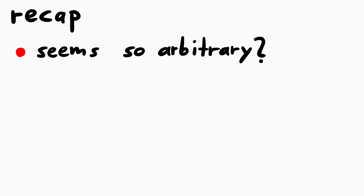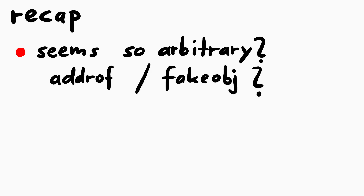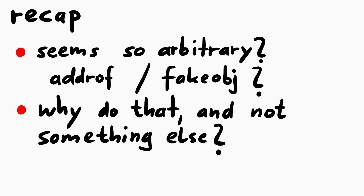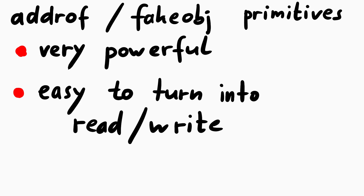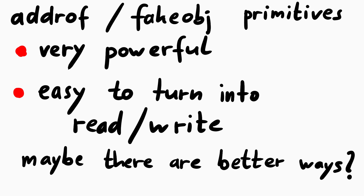Before finishing, I want to emphasize one thing as a recap of this whole journey. Maybe all of this seems arbitrary, especially with these weird primitives — fakeObject and addressOf. Yes, we could do something else, but there's a reason so many people use them: they turn out to be extremely powerful in practice. They allow us to easily control the inner structure of JavaScript objects and turn them into arbitrary read and writes. From my perspective I can totally see why they're so cool.